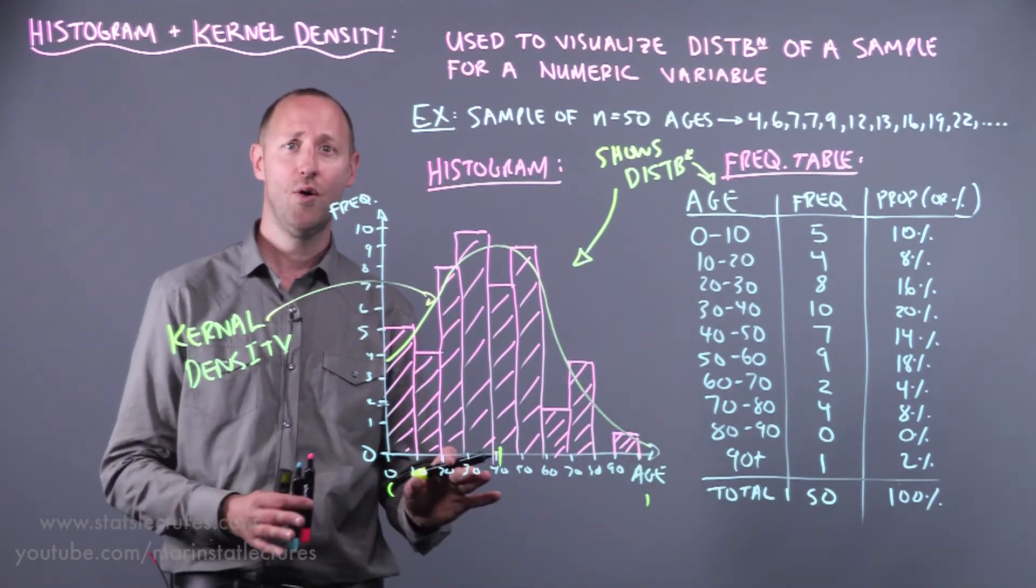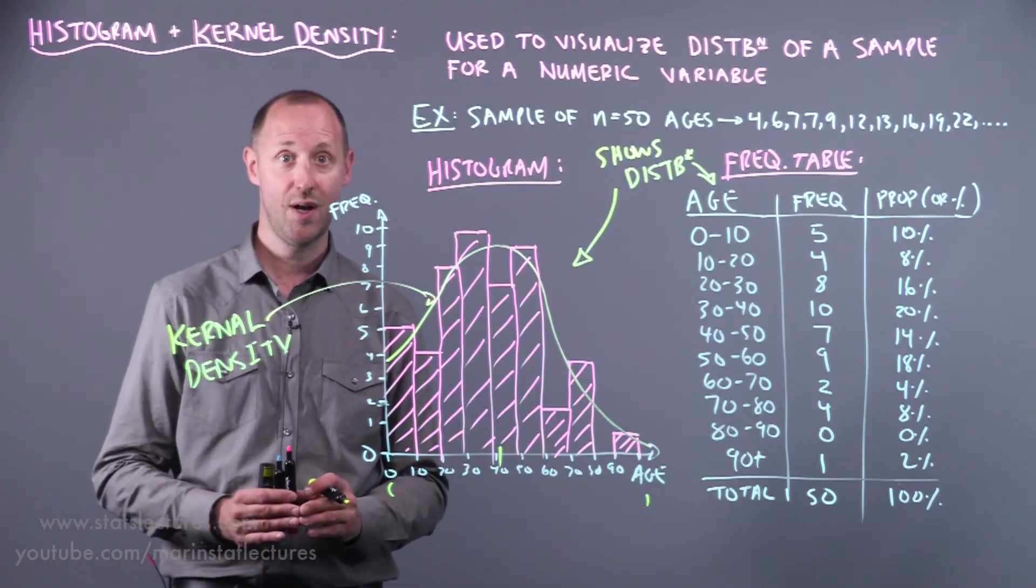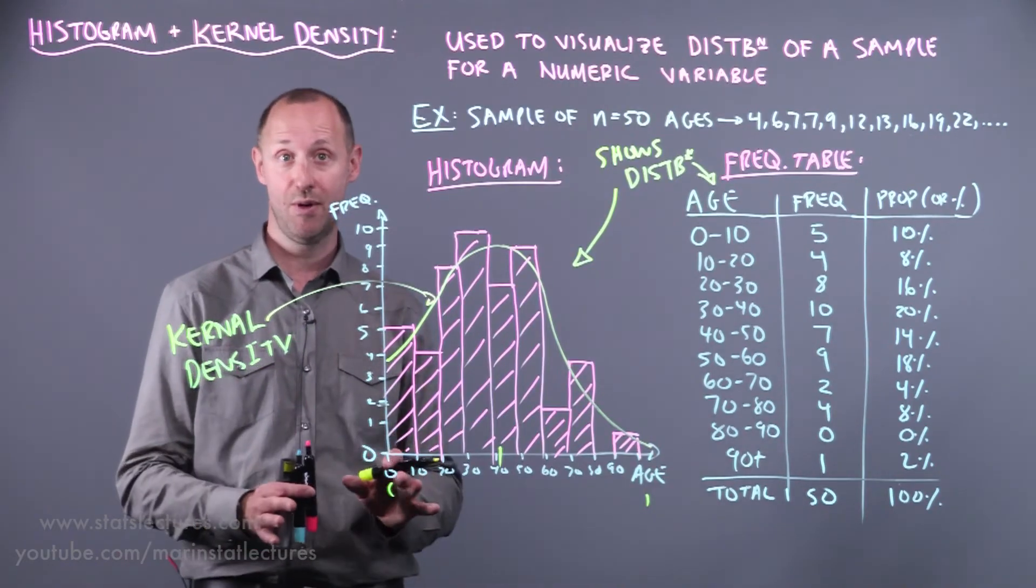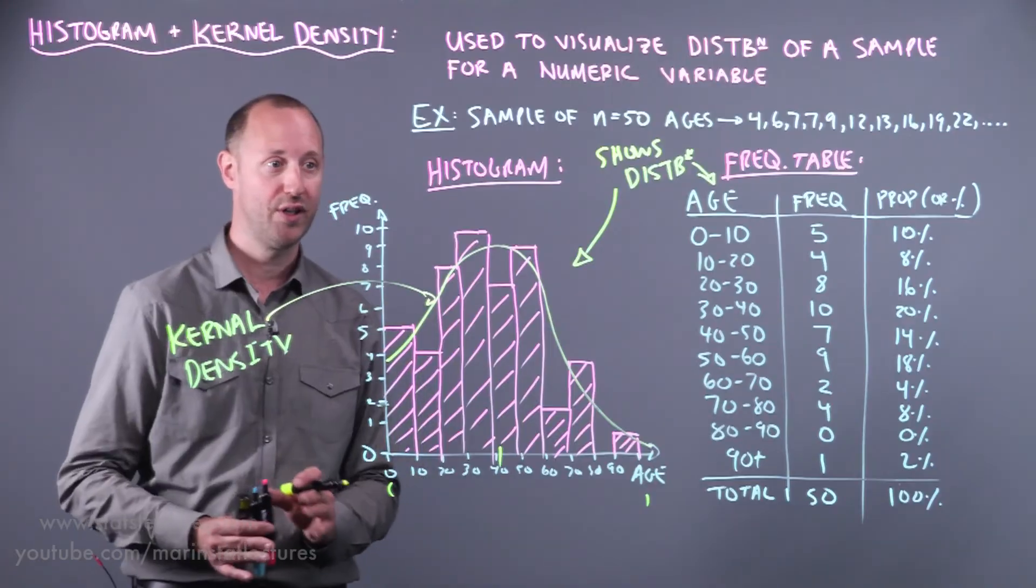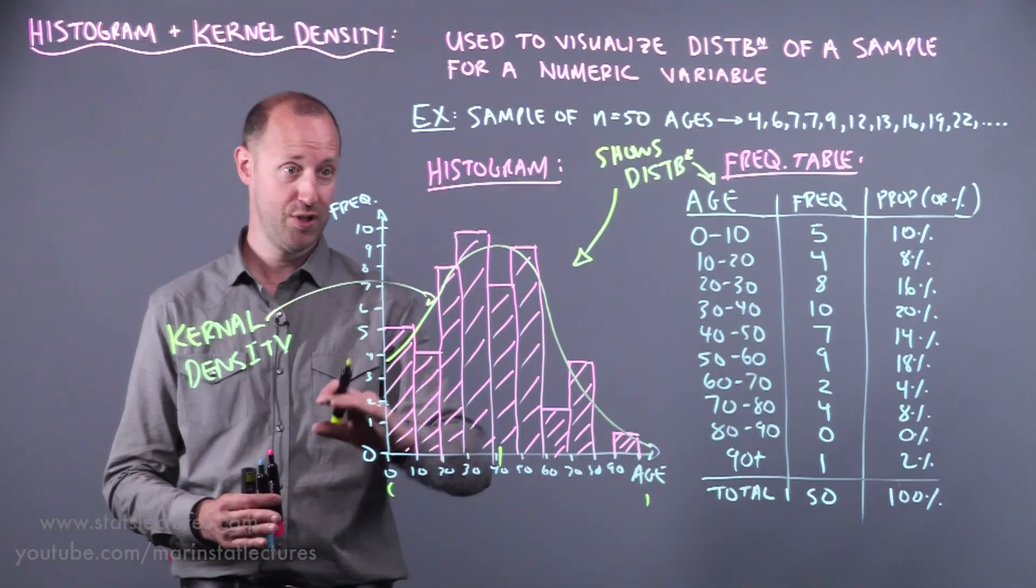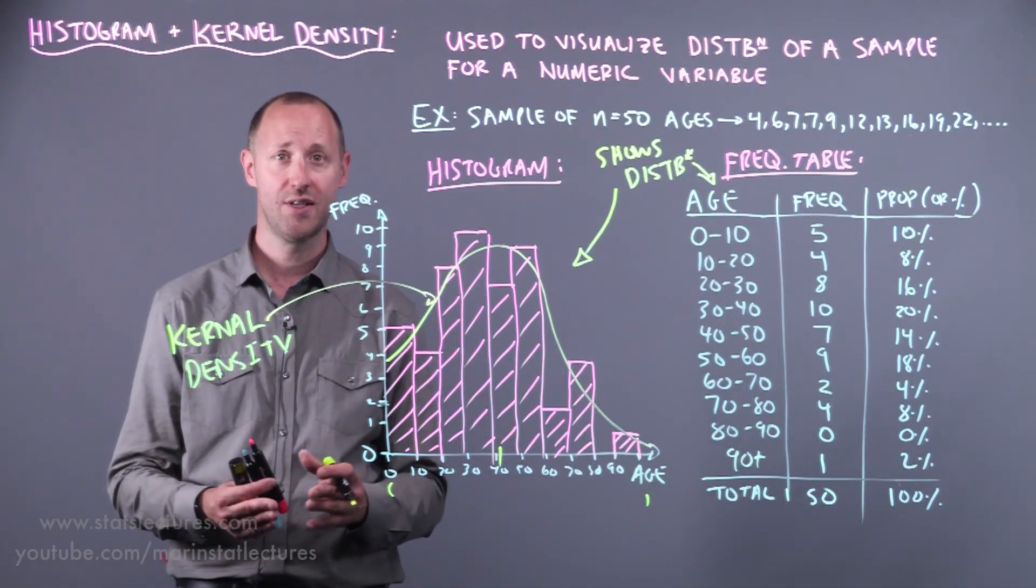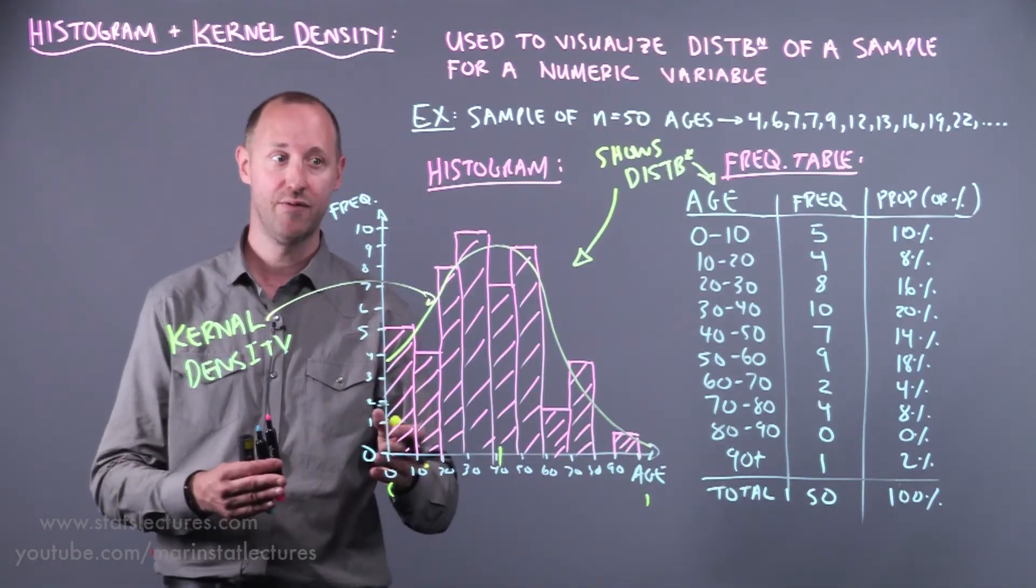Okay so again the histogram or the kernel density plot. They help us, well they're useful for helping us summarize the distribution of a sample for a numeric or continuous variable. And they give us a sort of estimate of what the probability distribution will look like. Okay and again probability distribution is another concept we're going to build on and expand on in following videos.